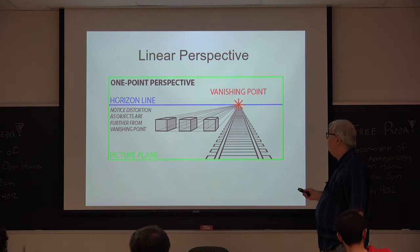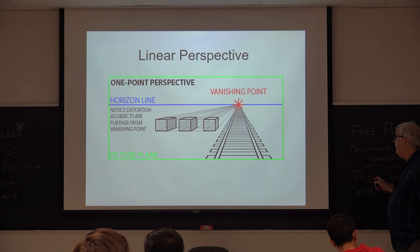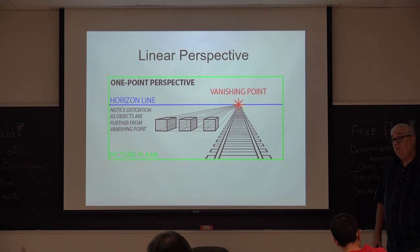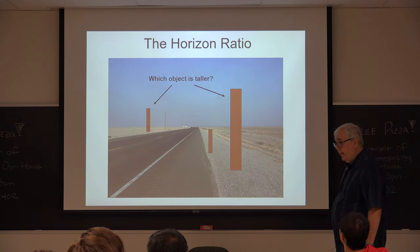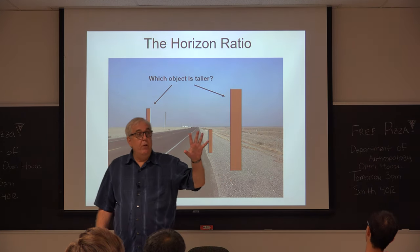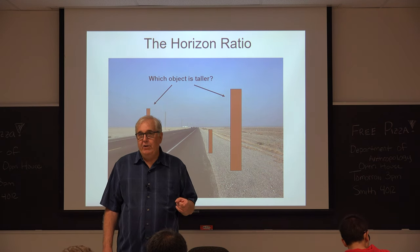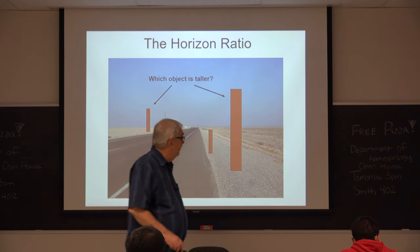That brings us to linear perspective, which is a powerful source of information about 3D shape. The idea is that parallel lines in the environment will converge at a single point on the horizon, and we can exploit that to calculate real shapes and distances. There are a couple of other things related to linear perspective, including the strong assumption that objects are resting on the ground. There's also a lot of information from the horizon, where all parallel lines converge — a kind of optical infinity.